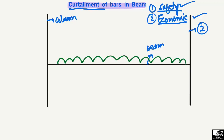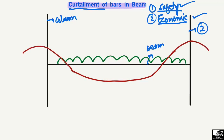...this beam will bend, and it will show some bending moment. I'm drawing the bending moment diagram. This is the general bending moment diagram for such a beam when there is a uniformly distributed load (UDL) acting on it. The red curve is the bending moment diagram for this beam and column setup.